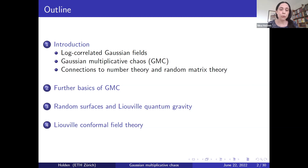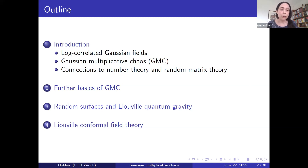I will start the talk by giving a brief introduction to log-correlated Gaussian fields and to Gaussian Multiplicative Chaos, and I will also very briefly comment on the connections to number theory and random matrix theory. In the second part I will give further basics of GMC, and then in the third and fourth parts I will present two research areas where GMC plays an important role: random surfaces and Liouville Quantum Gravity, and Liouville Conformal Field Theory.